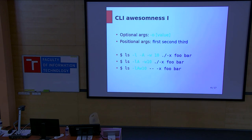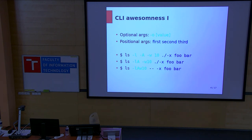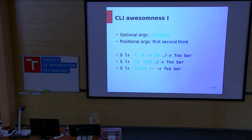We all use command line apps because they are easy to script and fast to execute. Let's check out how we can use command line utilities. We all use the LS command — what is the difference between the first, second, and third invocation? There is no difference for the command itself. We can say dash-L space dash-A space dash-W space 10, which means long output, ignore dotfiles, and limit the width of output to 10 columns, then list contents of directory bar.